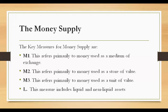M1 is the narrowest measure of the money supply. It includes currency in circulation, demand deposits, other checkable deposits, and traveler's checks. The clue for M1 is that it is used as a medium of exchange.